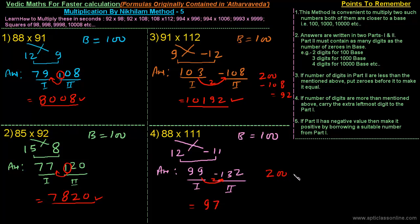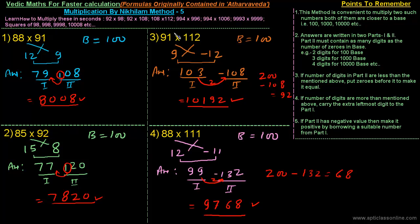Adding 200 to minus 132 gives 68. So part 2 becomes 68, which already contains two digits. The final answer is 9768. We always have to remember these key points to solve questions based on multiplication using the Nikhilam method.